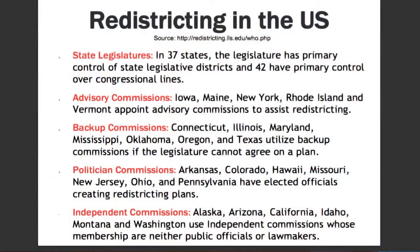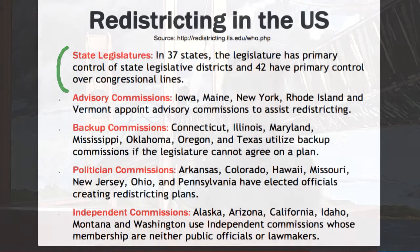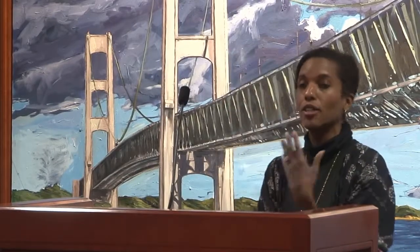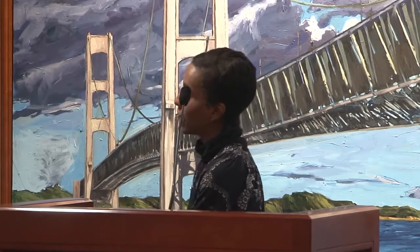Redistricting in the US takes lots of different flavors — lots of different variations. In most states, the majority — 37 states — the legislature has primary control over drawing the district lines every 10 years. They get information from the US Census, use that information on population and number of voters, and they are responsible for drawing maps.